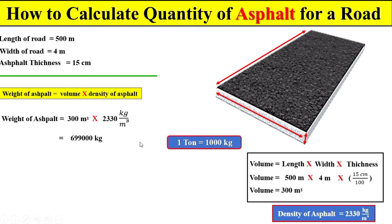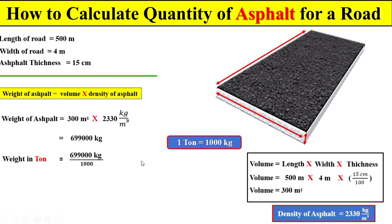Now, dear students, if you want to calculate the total quantity of asphalt in terms of tonnes, we know that 1 tonne is equal to 1000 kg. So we divide the total weight by 1000, and we can get the total weight of asphalt in terms of tonnes.